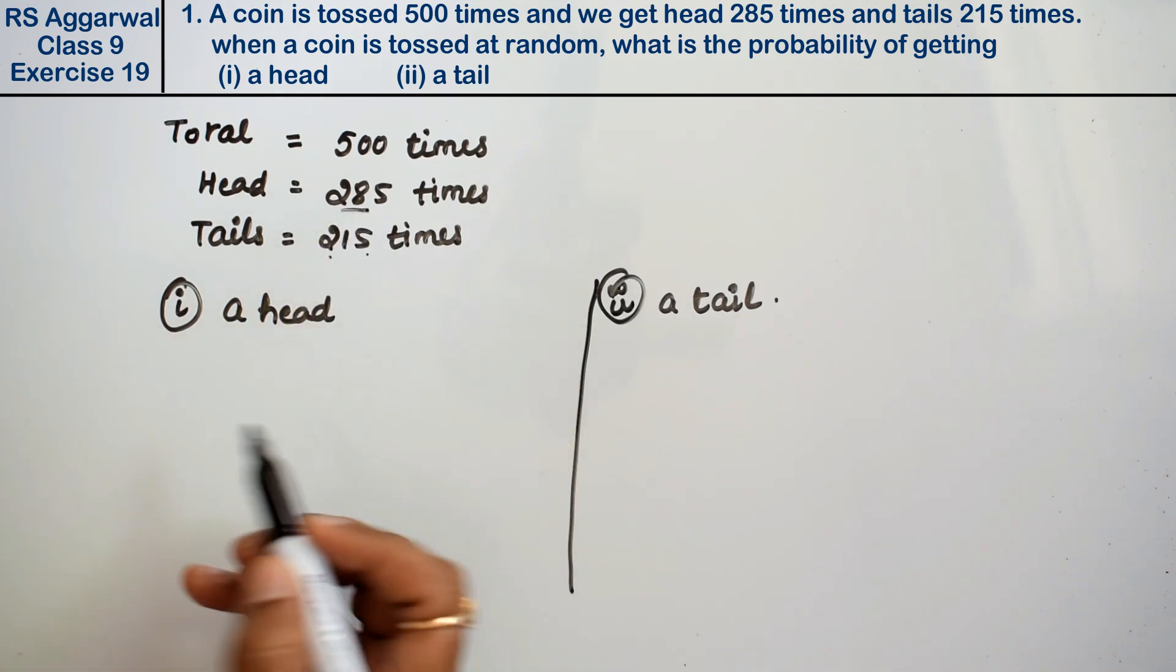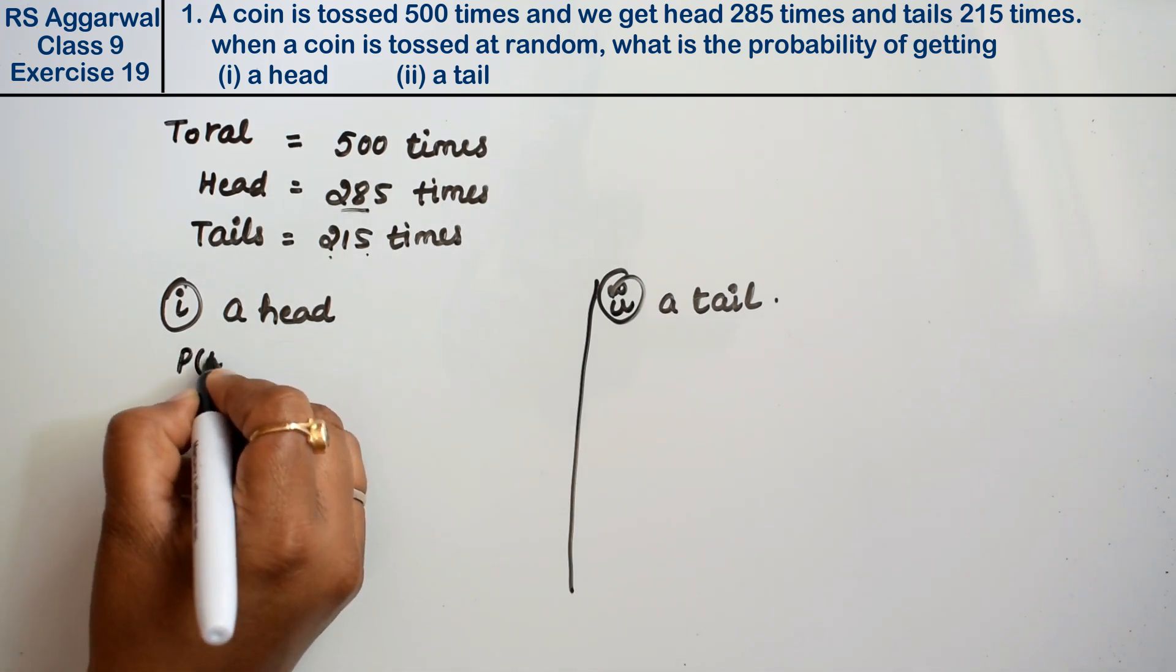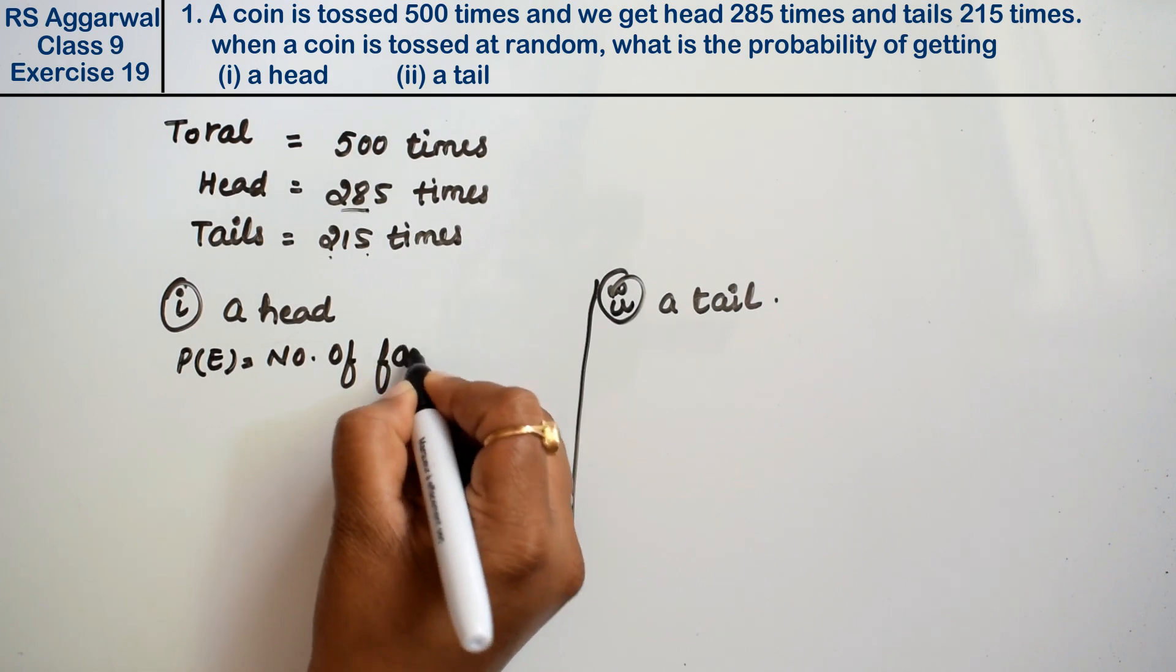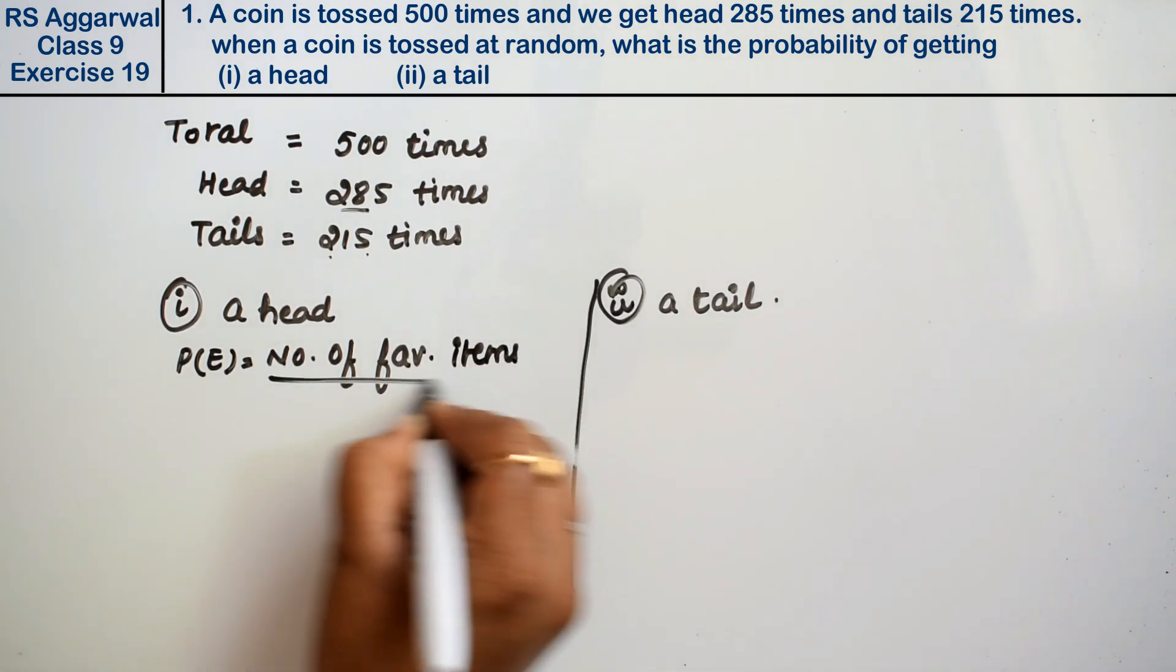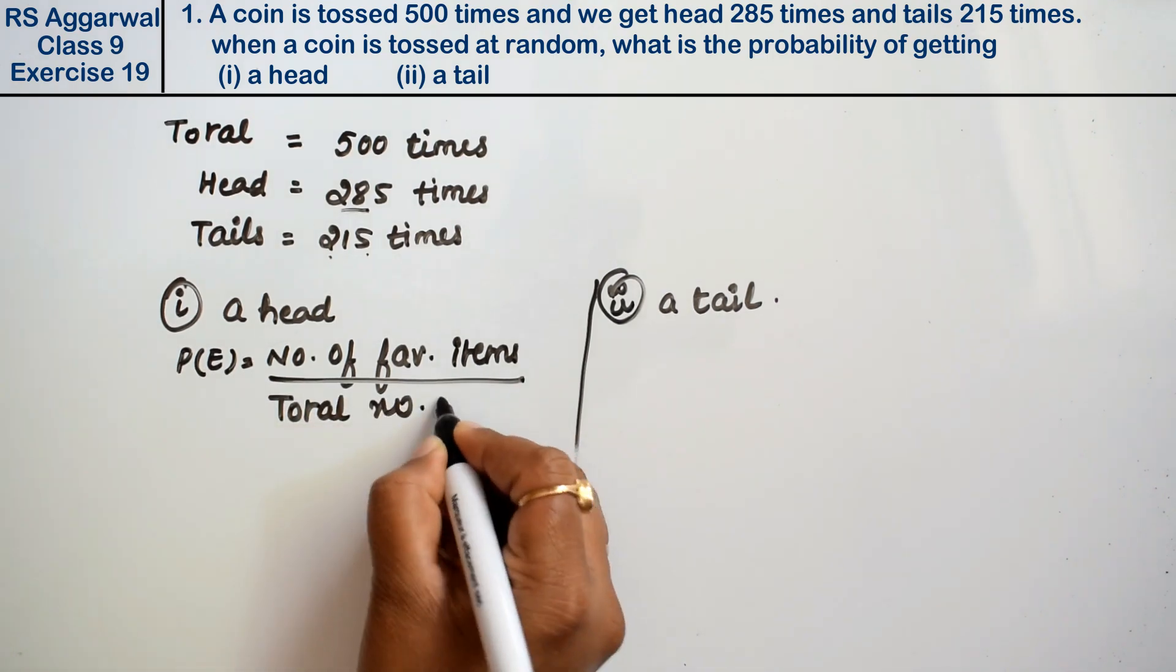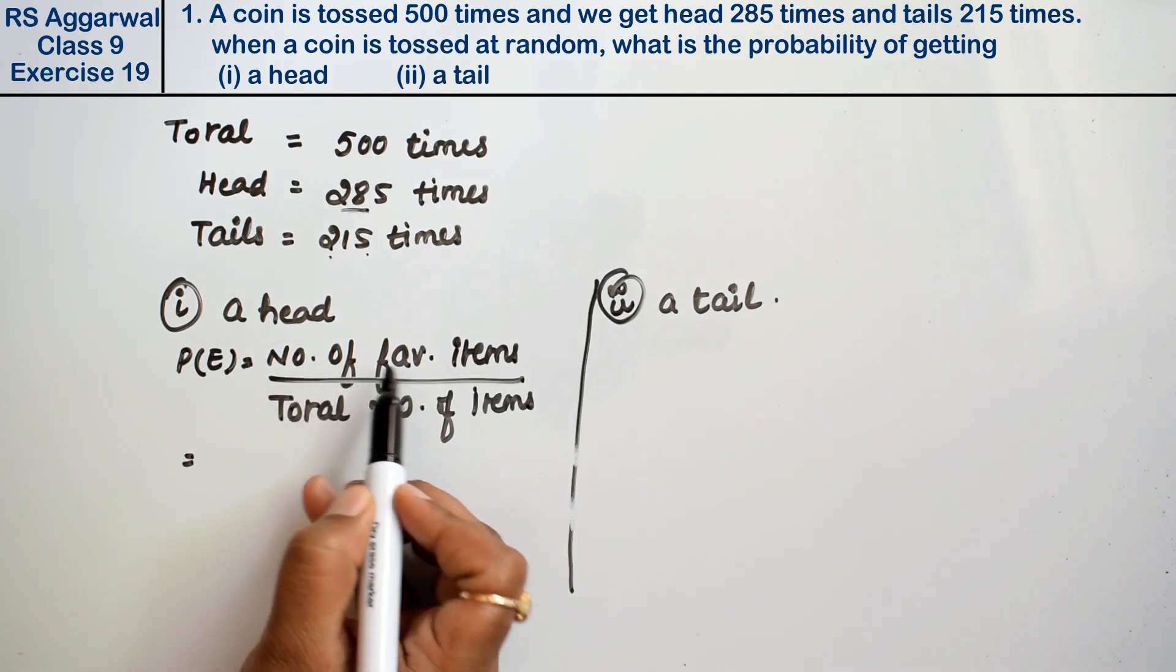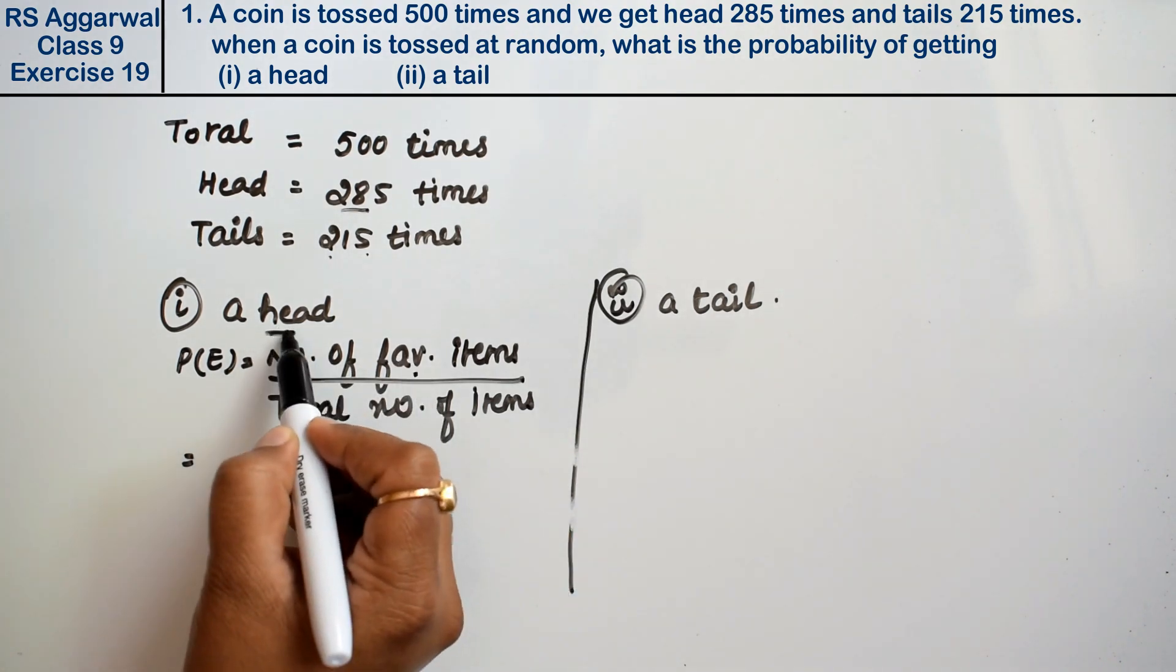What is the probability formula? It is written as P(E) = number of favorable items divided by total number of items. Here items means tosses. Favorable means head, so how many times is the head? 285 times.